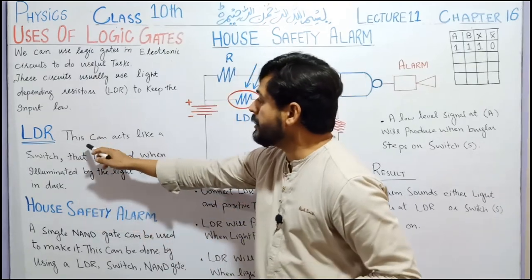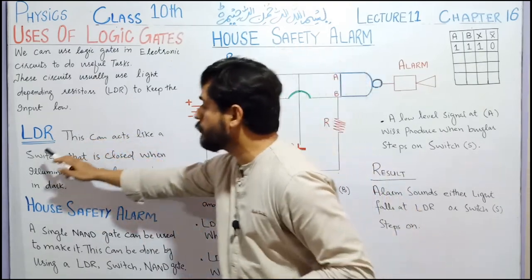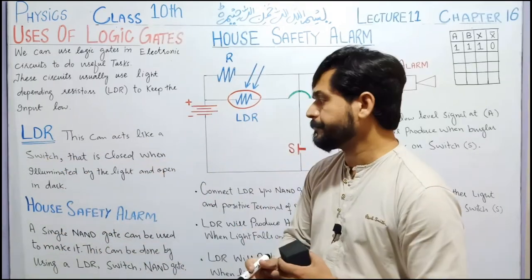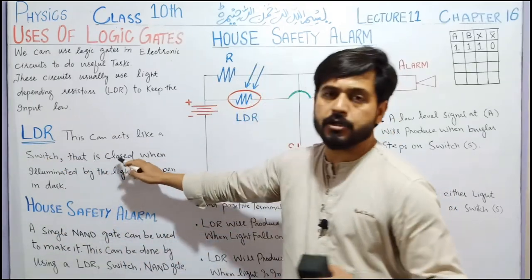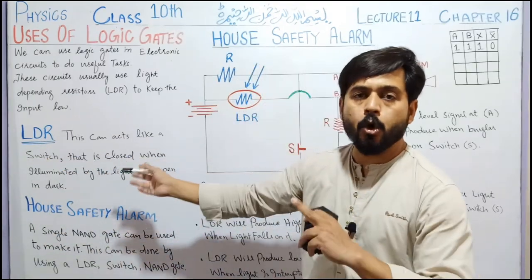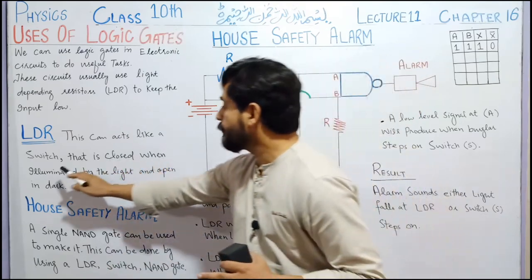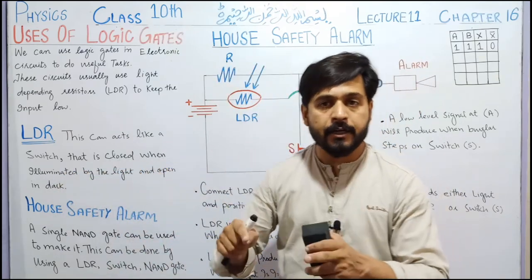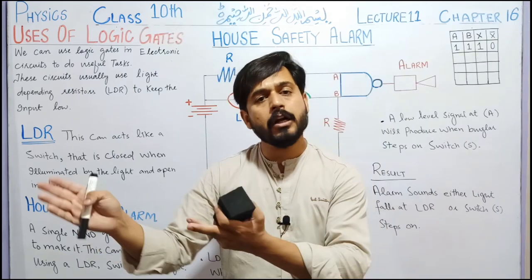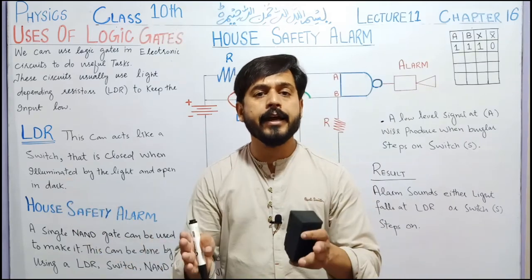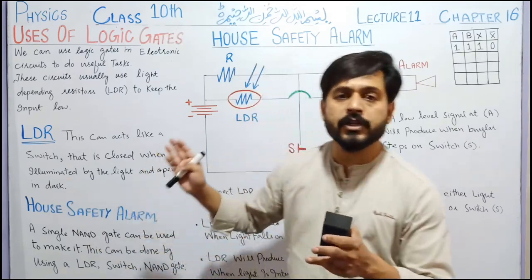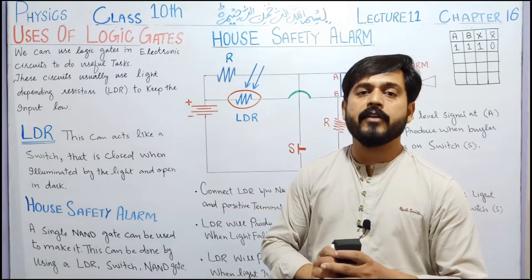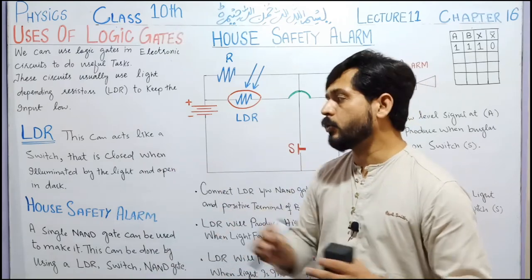So the LDR can act like a switch — it is just like a switch. That switch is closed, meaning ON, when illuminated by light. When light falls on it, this switch is considered ON. And when there is darkness and the switch is open, then this switch is OFF — no current passes through it.